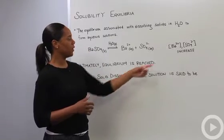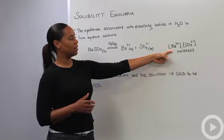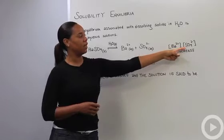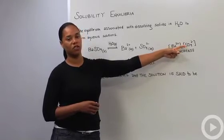But over time, the concentration of the individual ions will start to increase. You'll get an increase in the concentration of Ba²⁺ and an increase in the concentration of SO₄²⁻.